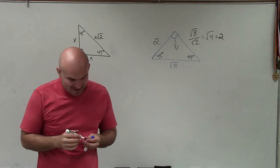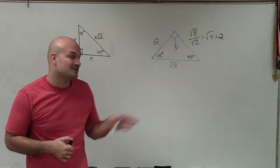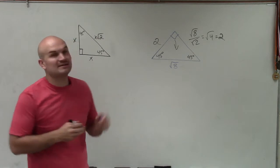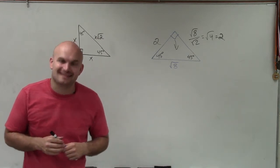So there you go, ladies and gentlemen. That is how you find your missing measures of a 45-45 degree triangle when given the hypotenuse. Thanks.